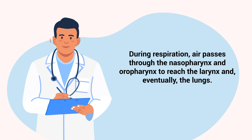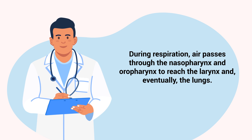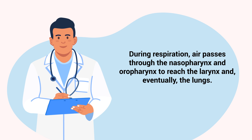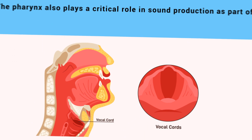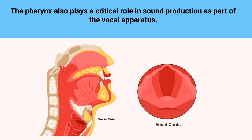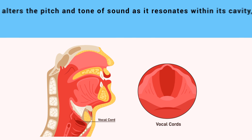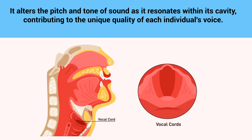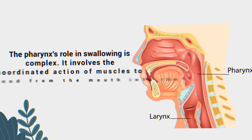During respiration, air passes through the nasopharynx and oropharynx to reach the larynx and, eventually, the lungs. The pharynx also plays a critical role in sound production as part of the vocal apparatus. It alters the pitch and tone of sound as it resonates within its cavity, contributing to the unique quality of each individual's voice.